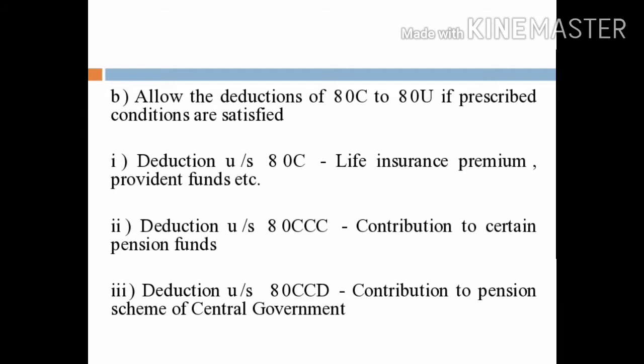The head here is income from salaries. We have to calculate the income from salaries. The gross total is calculated by adding all the heads of income. In this case, we have to calculate the head income from salaries.